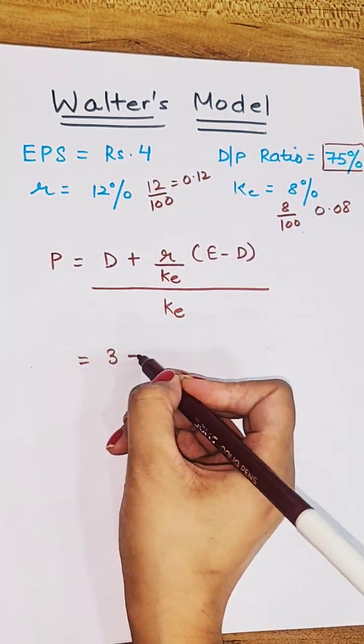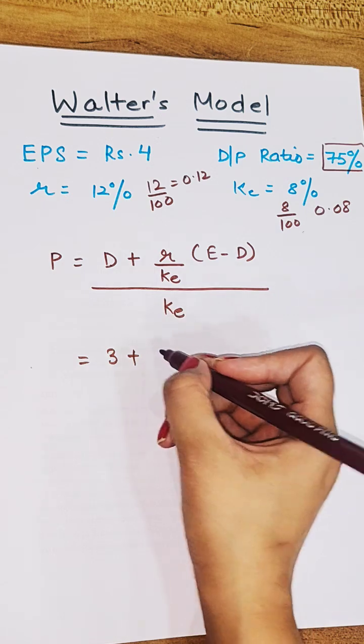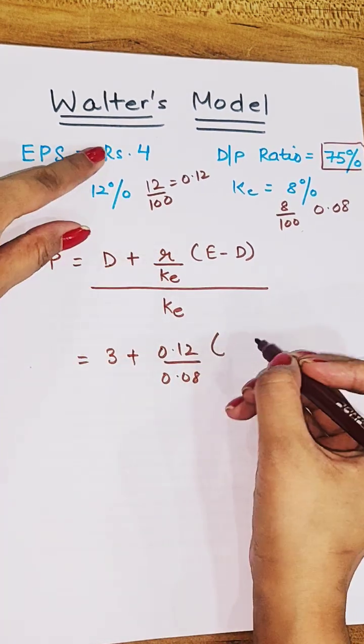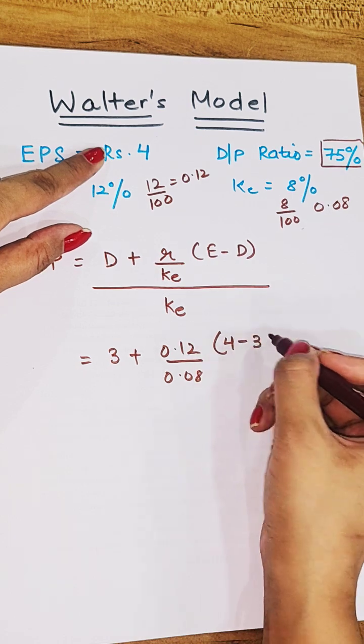So dividend per share is 3 rupees plus R is 0.12, KE 0.08, E 4 minus D 3.